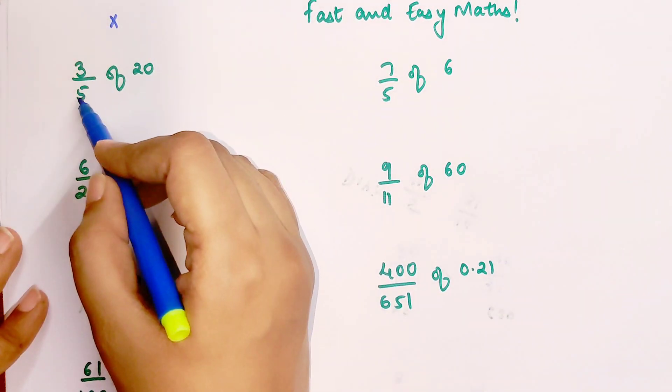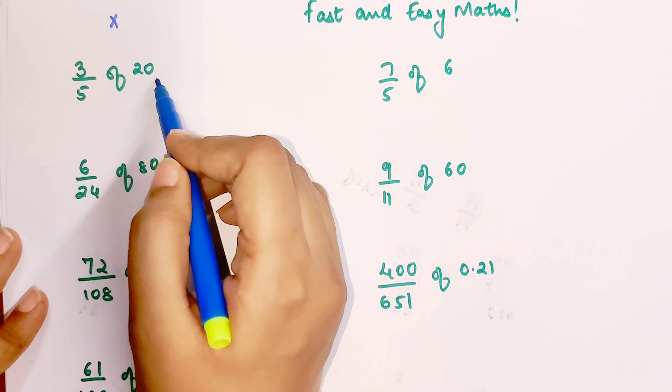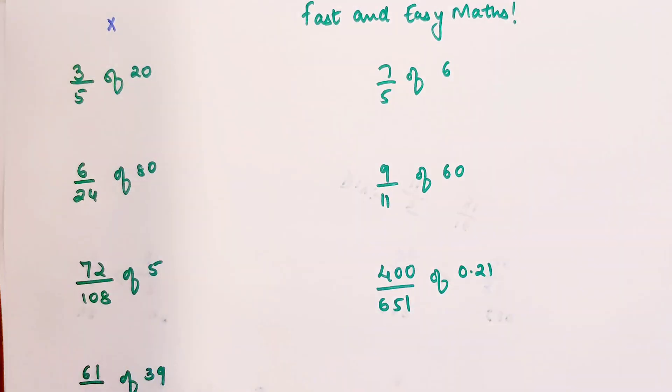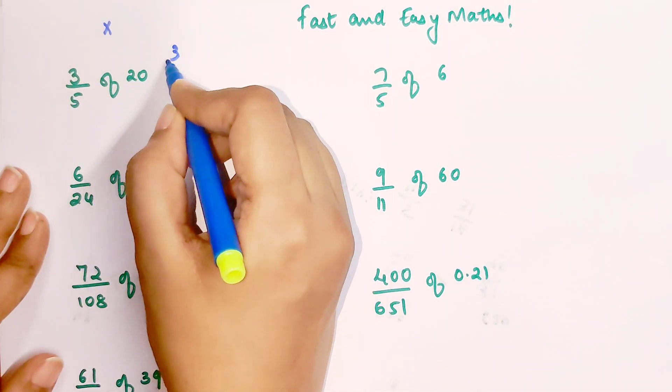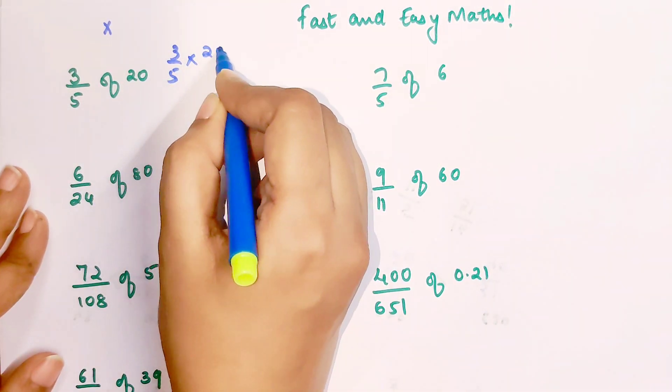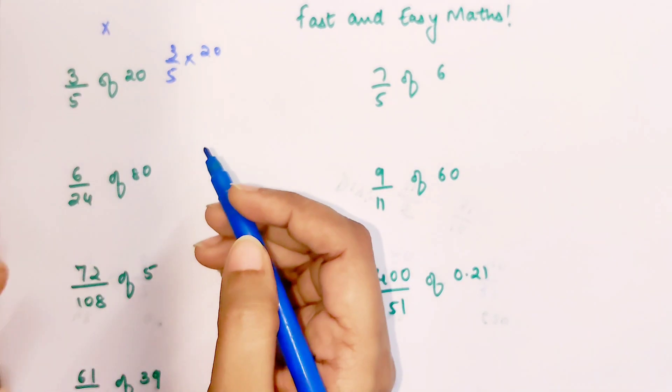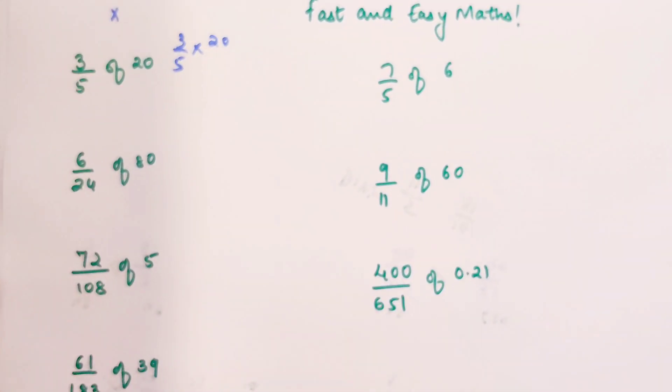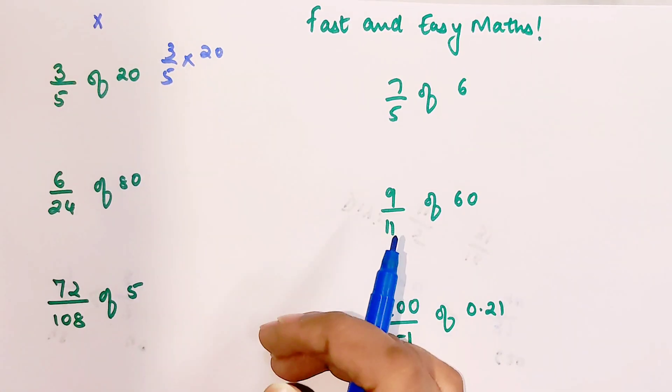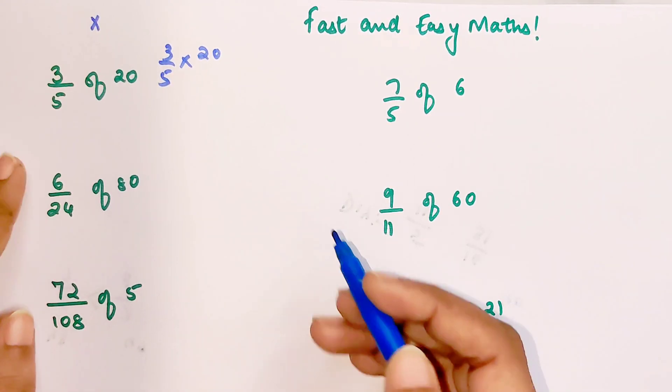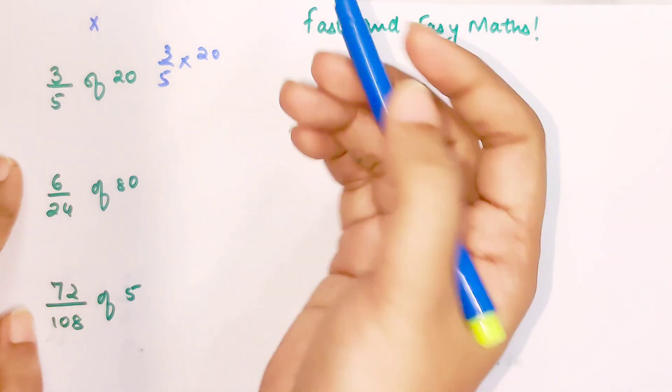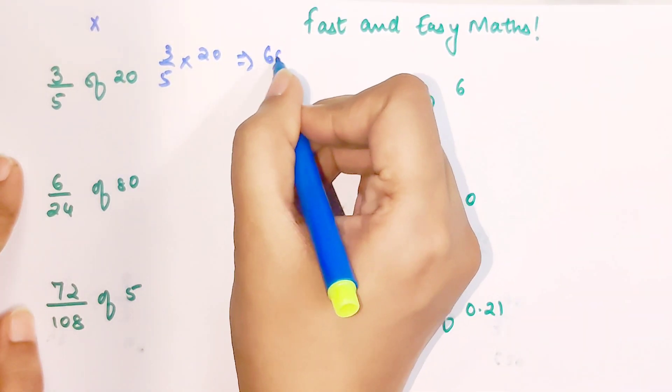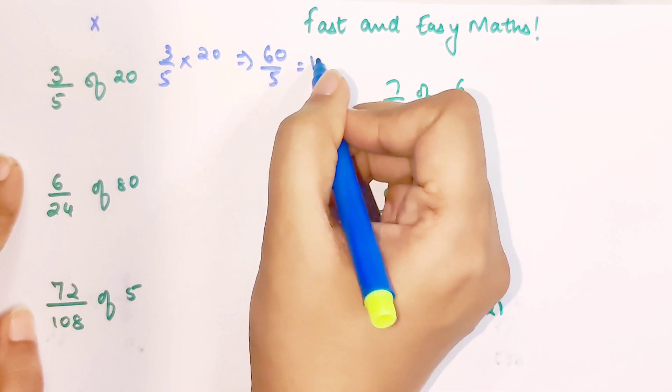So now you have 3 upon 5 of 20. Basically, you're taking the fraction 3/5 of 20, so you just do 3 upon 5 into 20. Now, a lot of you keep multiplying first and then dividing.